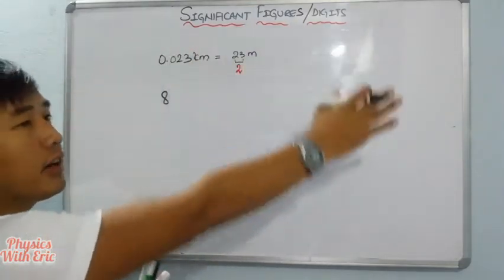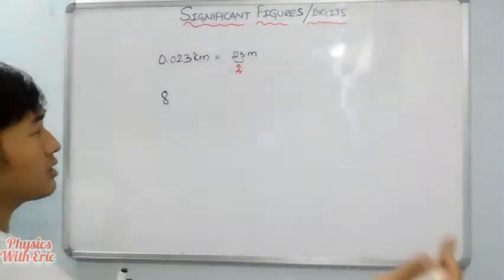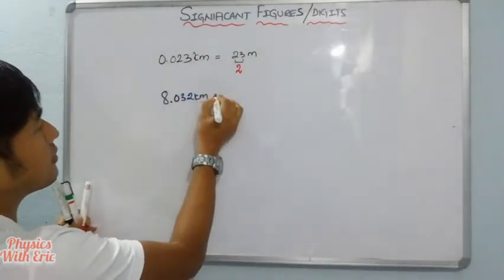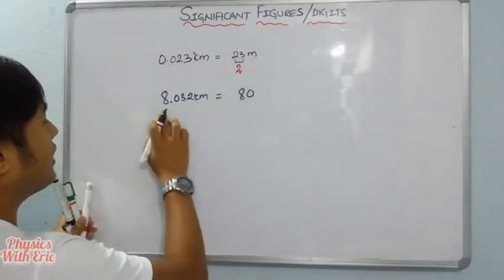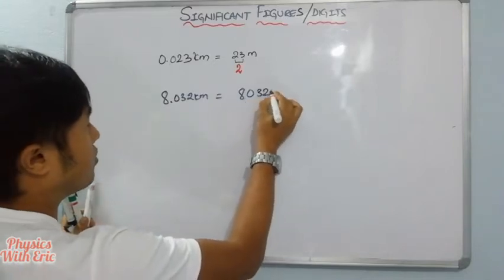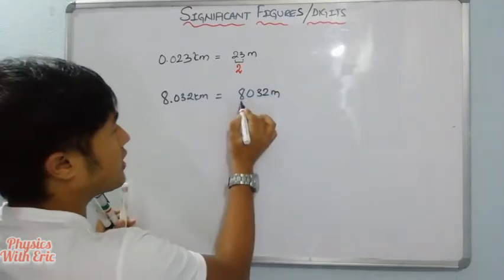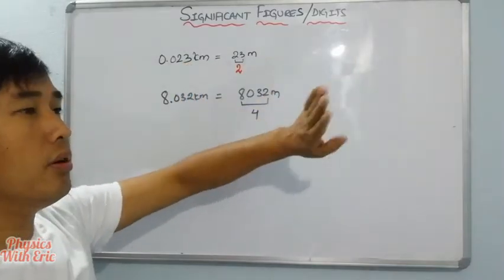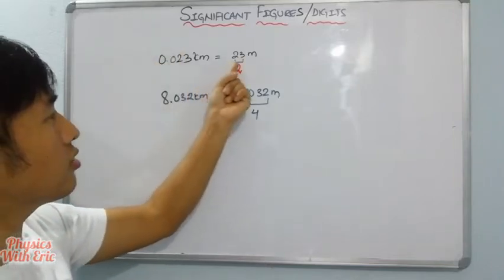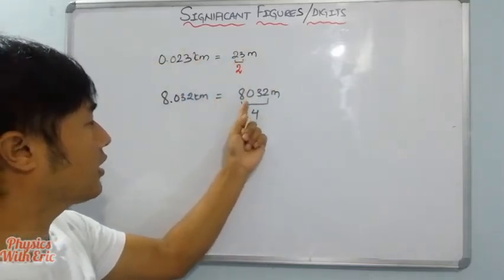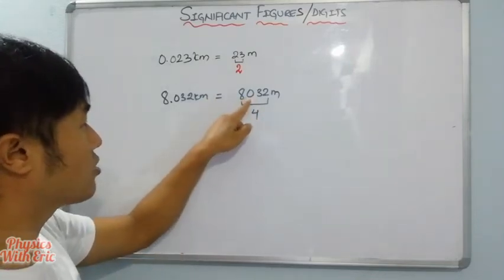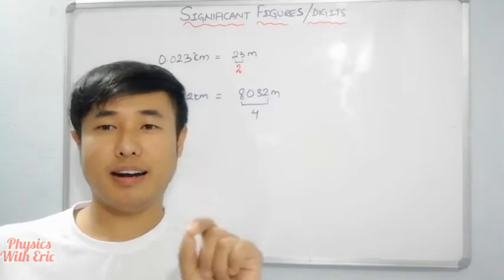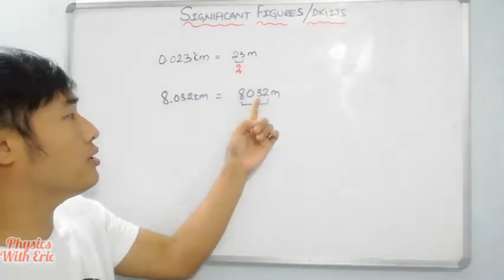The baby question is: what is a significant figure? For example, consider numbers like 8.032. Zeros between two non-zero digits are significant.